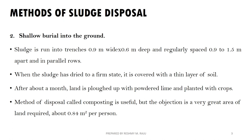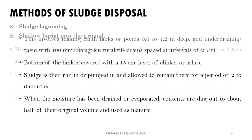The second method is Shallow Burial into the ground using trenches. These are 0.9m width or 0.6m depth. The sludge is placed in disposal trenches with a spacing of 0.9 to 1.5m. There is a thin layer of soil placed over the trench. Powder lime can also be added. This method of disposal, called Composting, is useful but a very great area of land is required — about 0.84 m² per person.